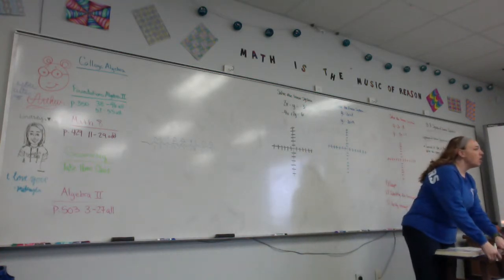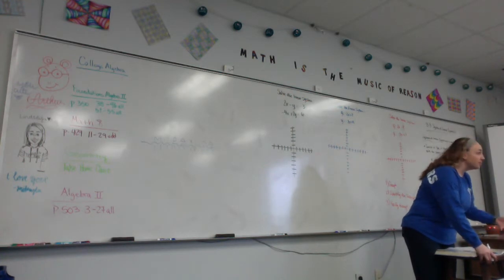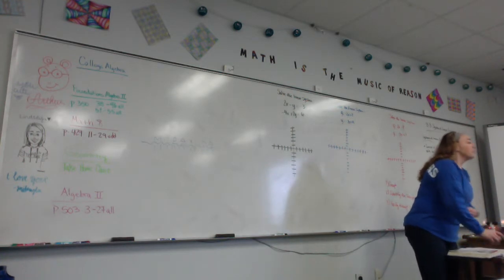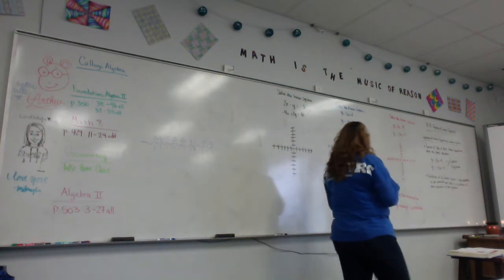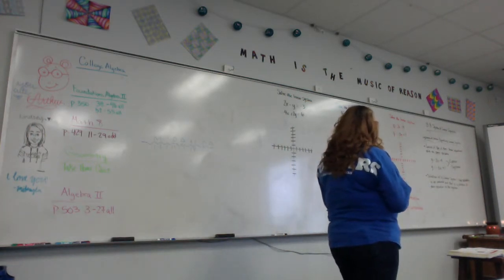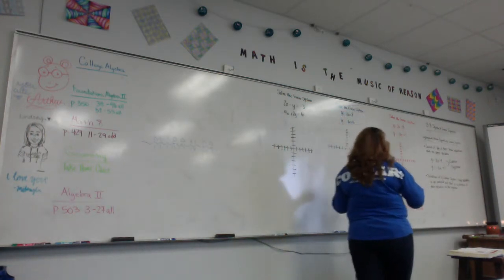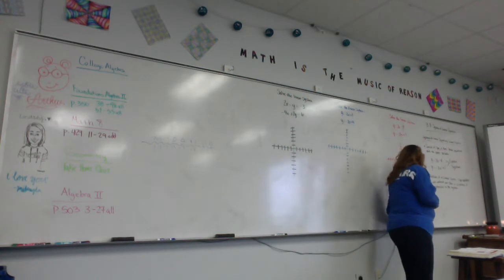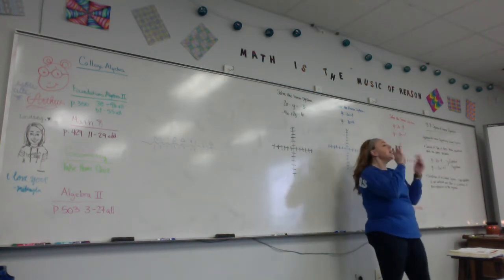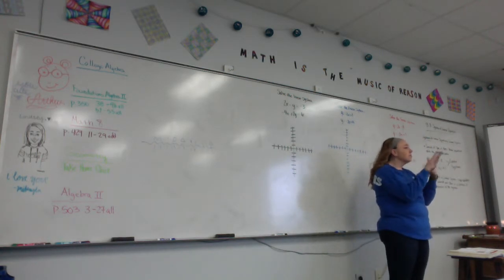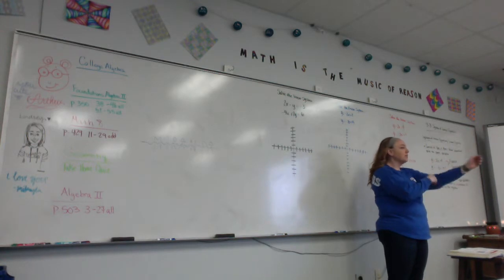And then we're going to figure out what a solution of a linear system is. A solution of a linear system with two variables is an ordered pair, meaning when I solve, I get an x and y that works for both of them. It's an ordered pair that is a solution of each equation in the system.